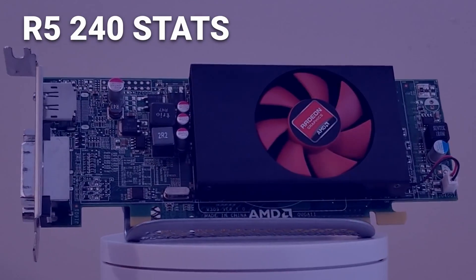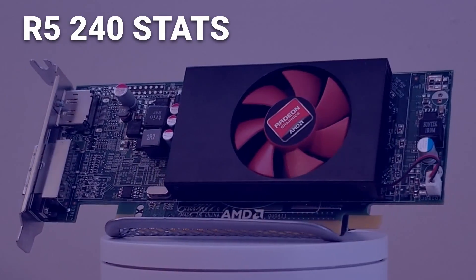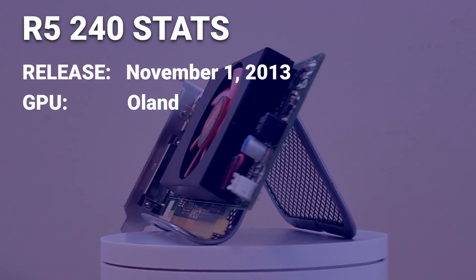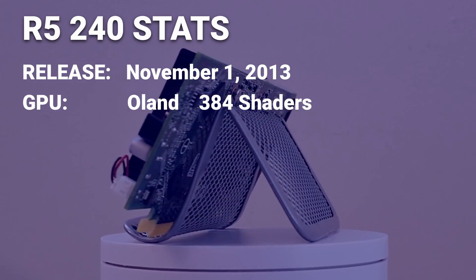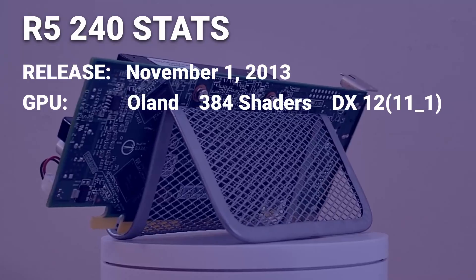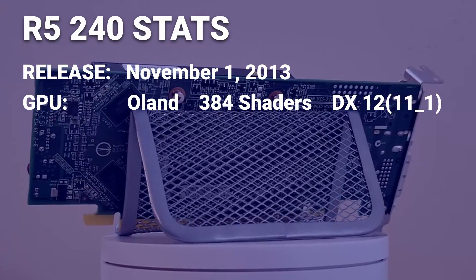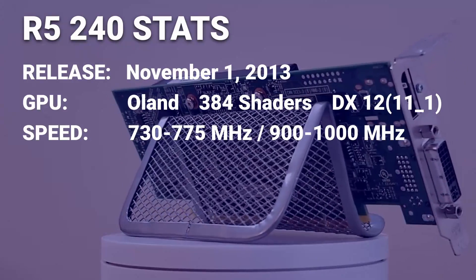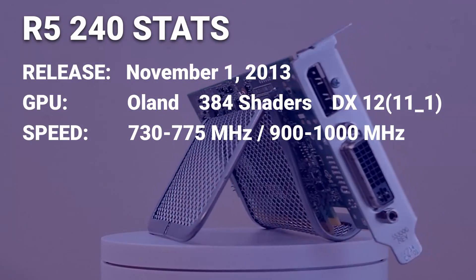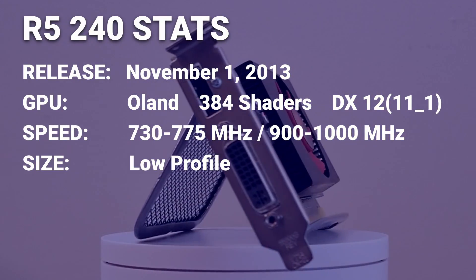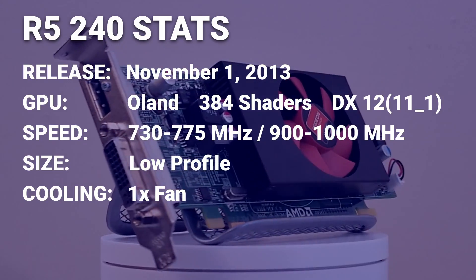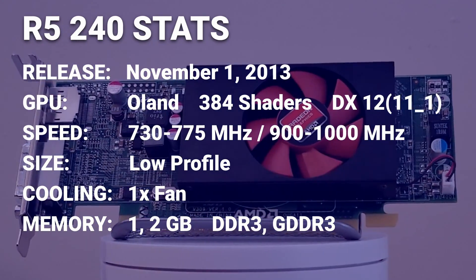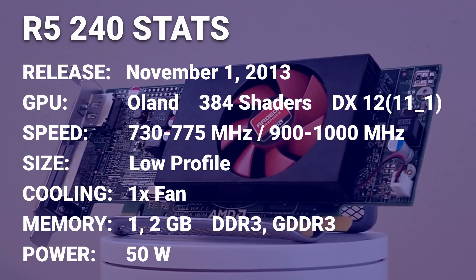The R5 240 is an OEM graphics card that was first released in late 2013. It's based on the OLAND graphics processor, has 384 shaders, and supports DirectX 12 feature set 11-1. The card runs at between 730 and 775 megahertz core clock and between 900 and 1000 megahertz memory clock. The card is low profile and features a single cooling fan. The R5 240 comes with one or two gigabytes of DDR3 or GDDR3 memory and uses up to 50 watts of power.